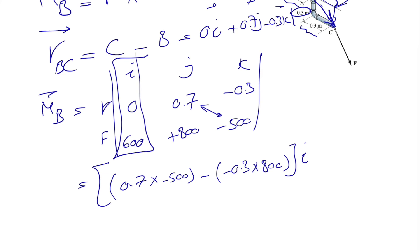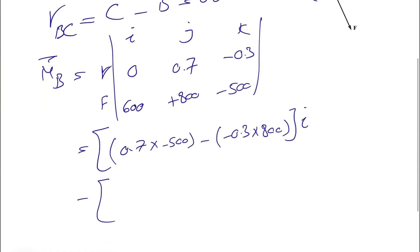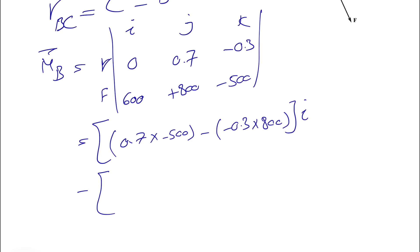Second, we're going to move to the J. And don't forget to put a negative sign for J component. This is coming from the formula for finding the determinant. So we have this time these two together and these two together. So we have 0 times -500, which is 0, minus 600 times -0.3. That would be our J.